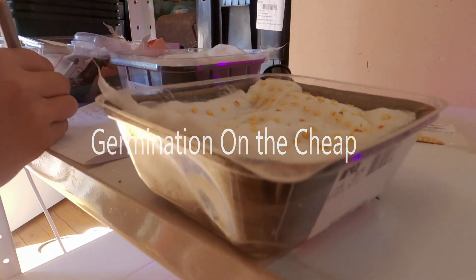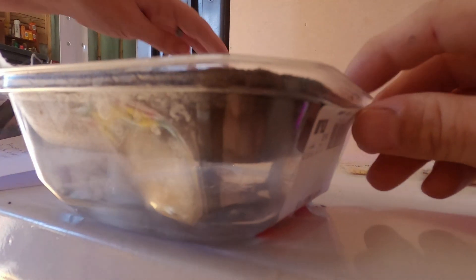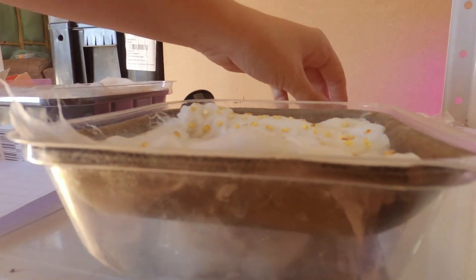So this is one of Alexia's ways of germinating using, let's call it upcycling, these old food containers. The bottom is flipped upside down, there's a little hole in one part of it, but basically what you need to do is you'll see there, there's a wick coming through so that you can have the water at the bottom.